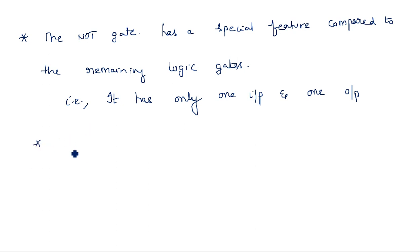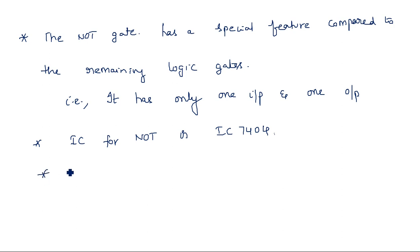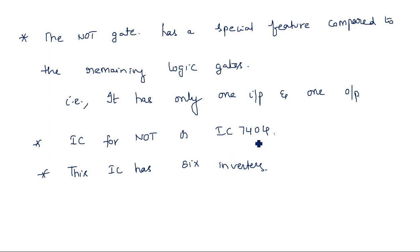The IC for this NOT gate is IC 7404. This IC has 6 inverters — 6 inverters are present in a single IC. It was constructed in such a way.